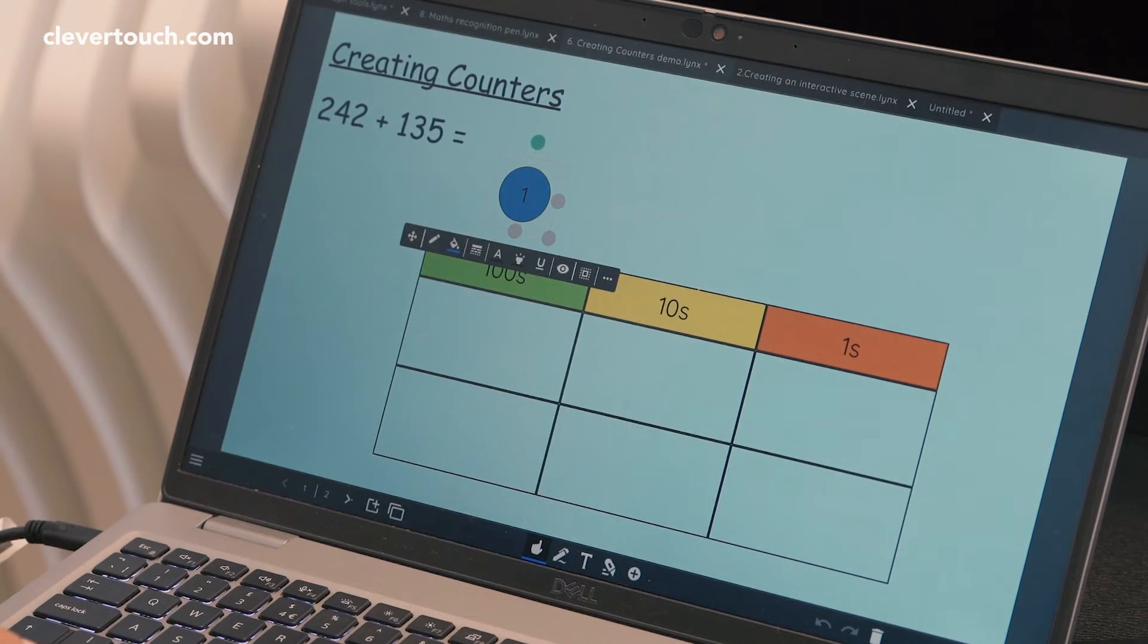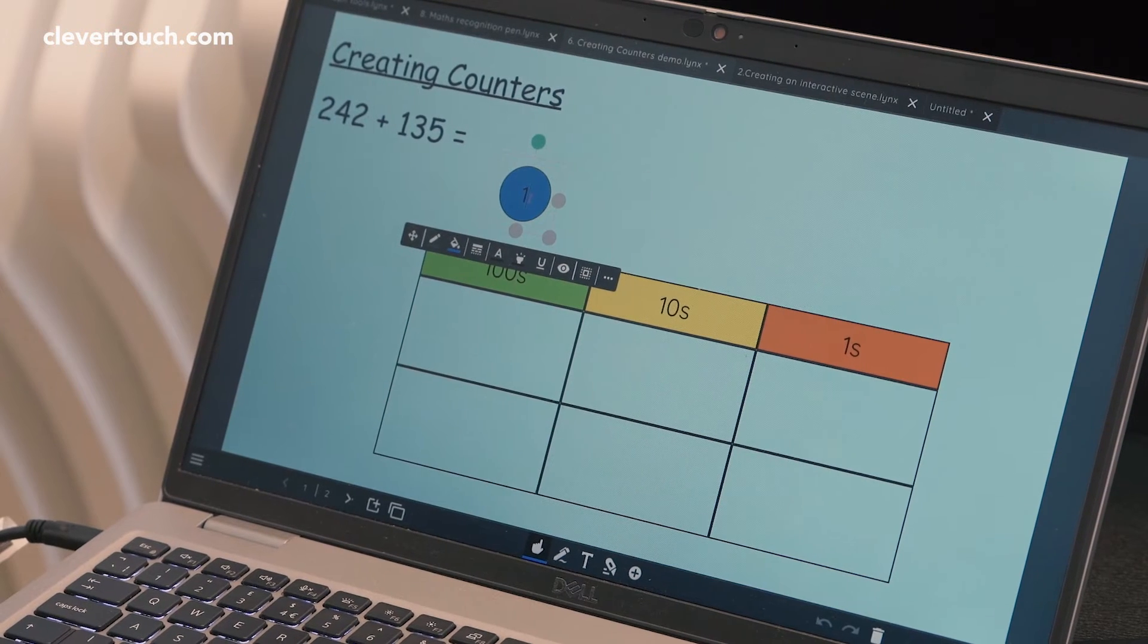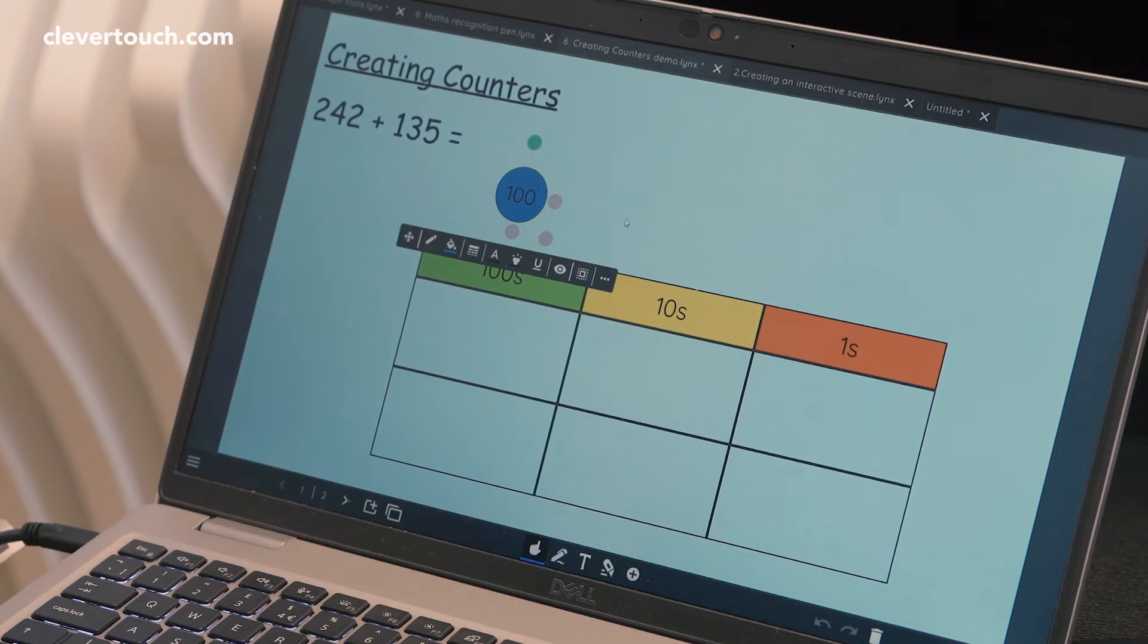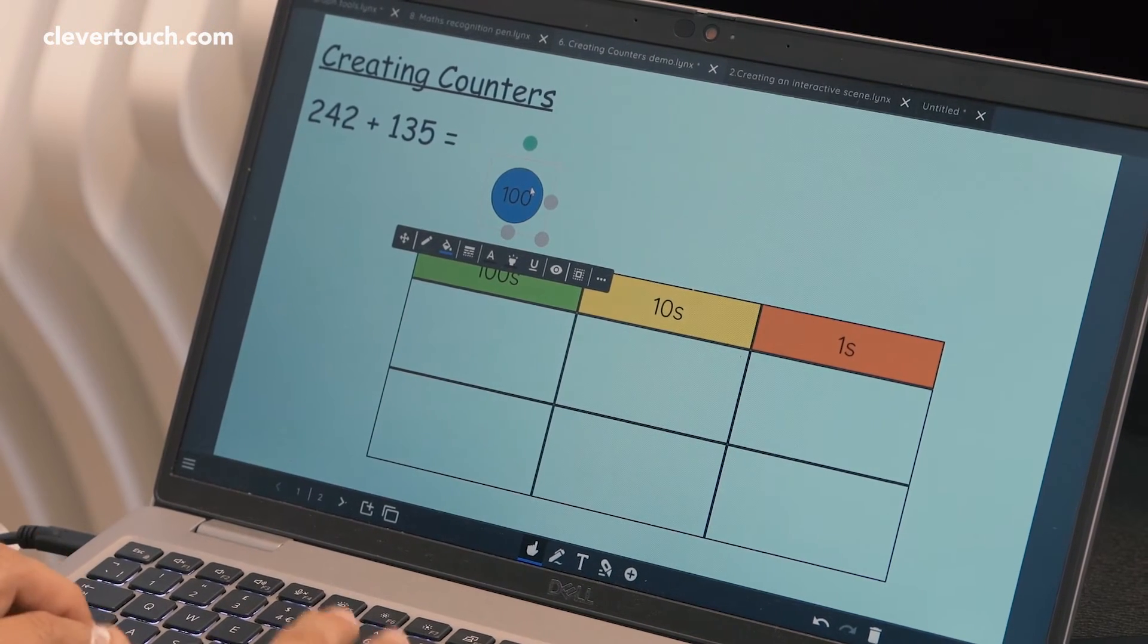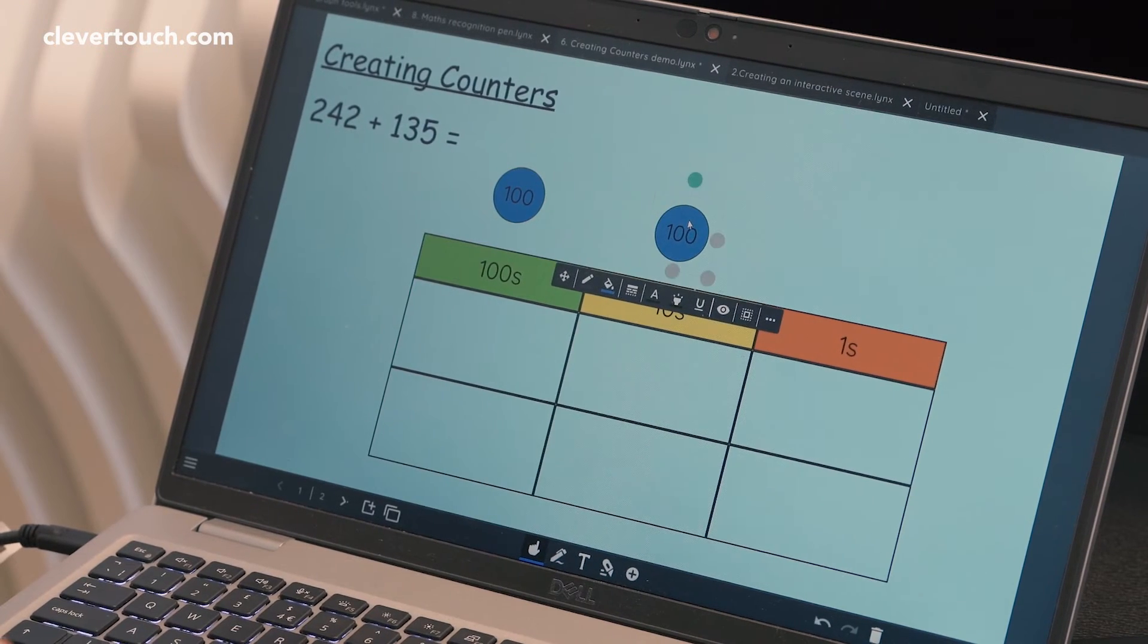So now I'm back over at the computer and if I double click I can type in there as well. That's going to be my hundred counter. I'm just going to copy that and paste it so it's exactly the same.